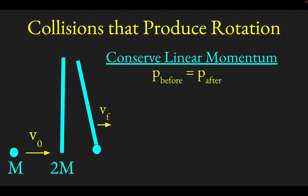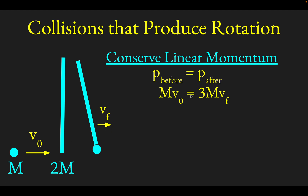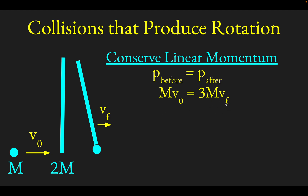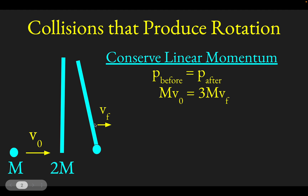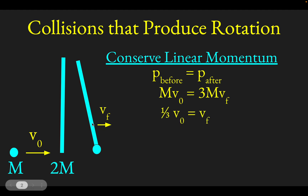Conserving linear momentum means the momentum before equals the momentum after. Before the collision, the ball comes in with momentum MV₀ to the right. That equals the momentum of the system after — the entire system is stuck together and translating to the right, so its momentum is 3M times its final velocity. Solving for the final velocity, we find the center of mass drifts to the right at one third of the ball's initial velocity.